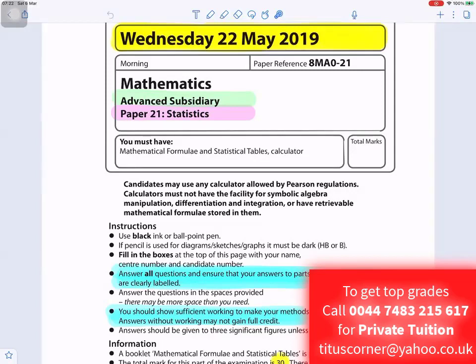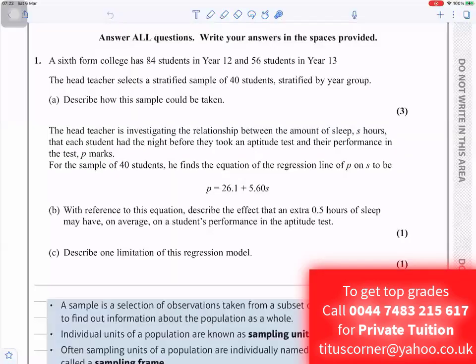Question number one: A sixth form college has 84 students in Year 12 and 56 students in Year 13. The head teacher selects a stratified sample of 40 students, stratified by year group. Describe how this sample could be taken. The next part: The head teacher is investigating the relationship between the amount of sleep, s hours, that each student had the night before they took an aptitude test and their performance in the test, p marks.